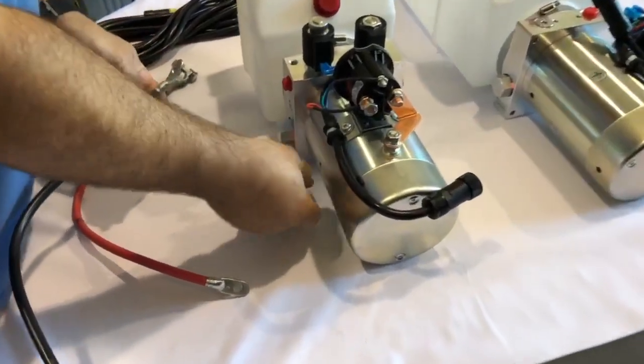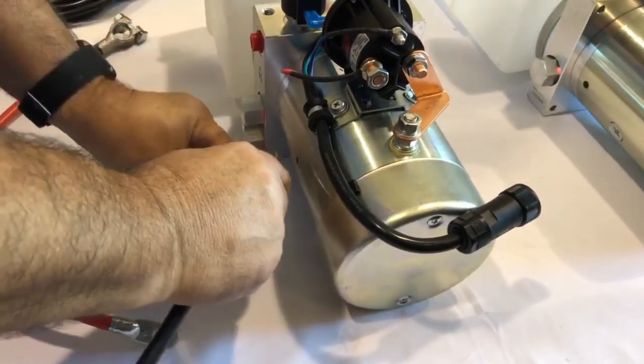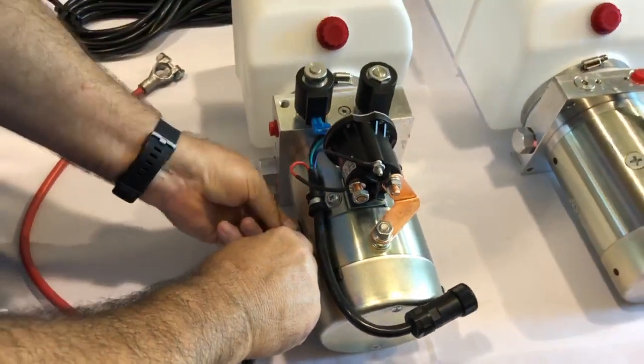Hi, this is Paul with Primary Remover. I'm demonstrating how to connect a double acting power unit made by DLH to a battery.